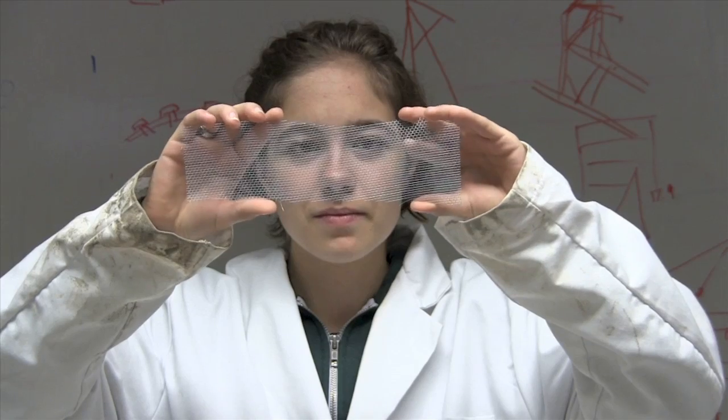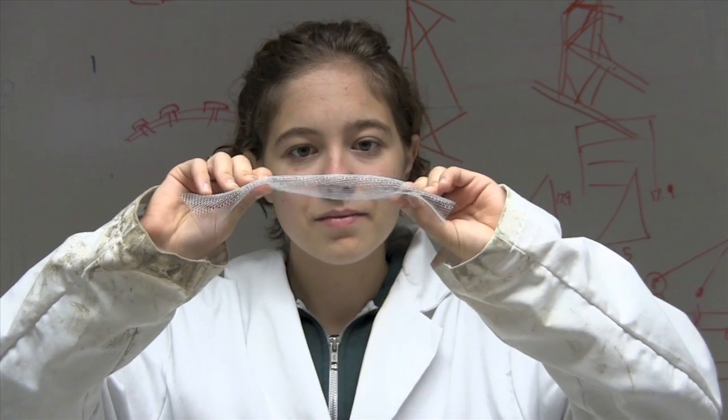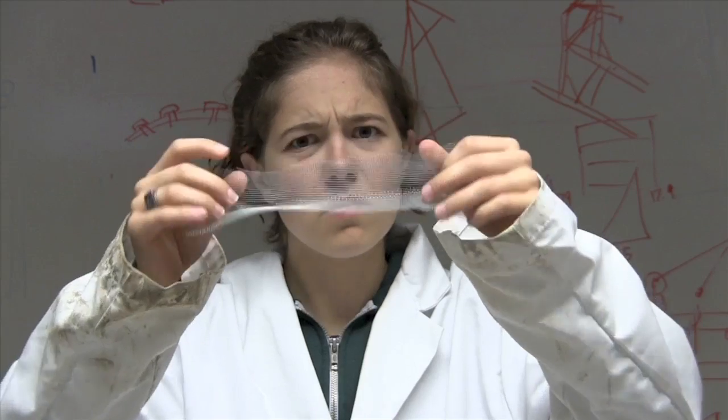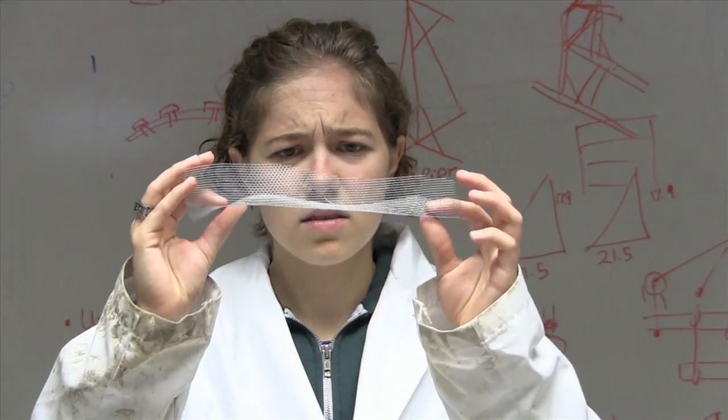We can also look at another material you have probably seen before, metal window screen. The metal does not break easily at all. Rather, it changes its shape and does not change back when Jenny stops pulling on it.